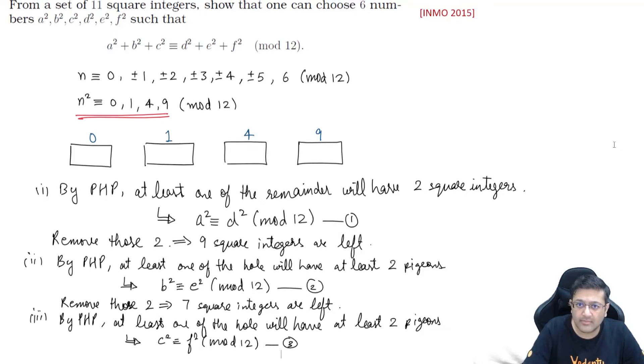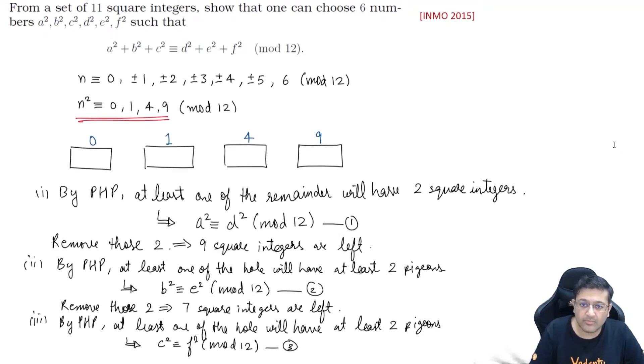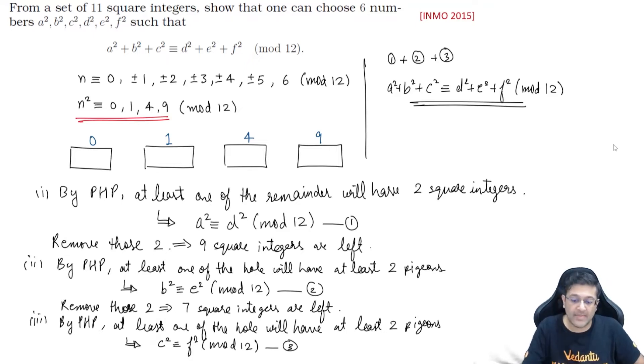Which will give you, let's say, c² ≡ f² (mod 12). Let that be the third equation. That's it. Adding equations 1, 2, and 3, you will simply get a² + b² + c² ≡ d² + e² + f² (mod 12). So by using PHP, you will always be able to choose overall such 6 numbers so that the sum of the 3 squares is congruent to the sum of the other 3.